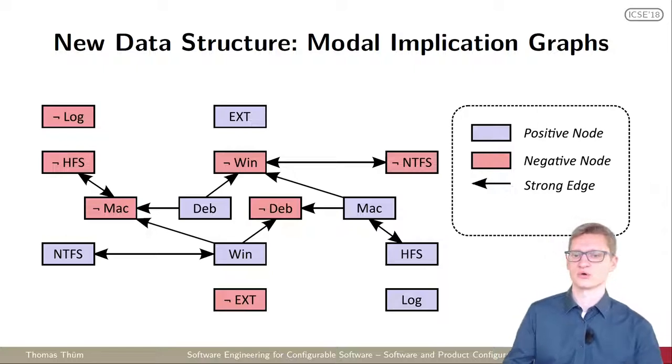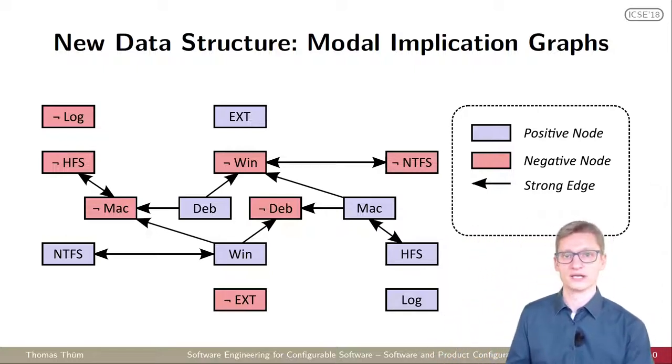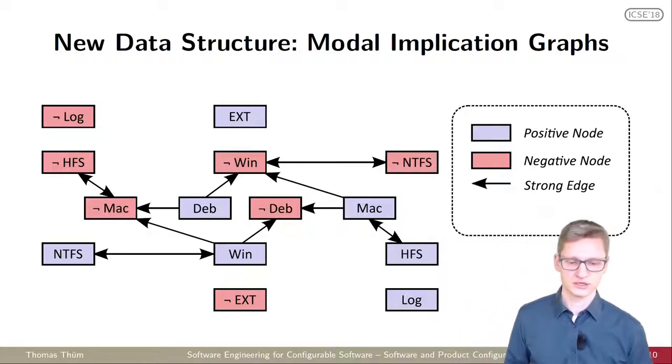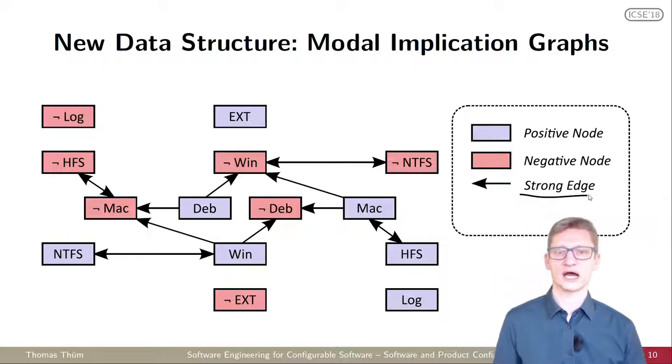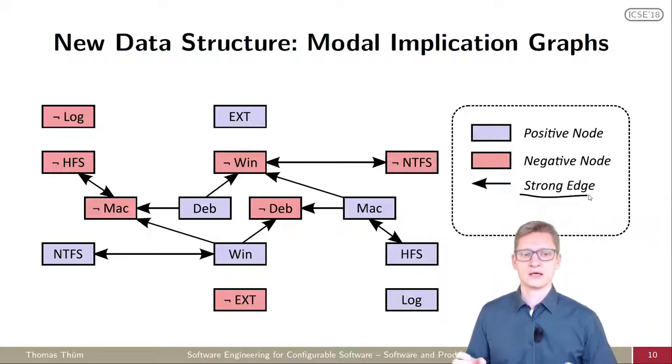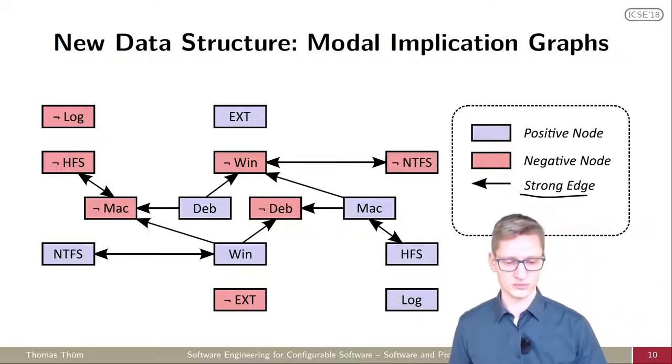So we introduced a new data structure for this purpose. The data structure is an extended version of an implication graph. An implication graph is already known. You have literals, meaning a variable or a negated variable, and you have strong edges between those. A strong edge means that you have a direct implication from one literal to another. The problem with implication graphs is that you can easily answer queries because it's actually a 2-SAT problem and it's easy to solve. But the problem is you cannot express everything. You can express everything as a 3-SAT but not as a 2-SAT problem.